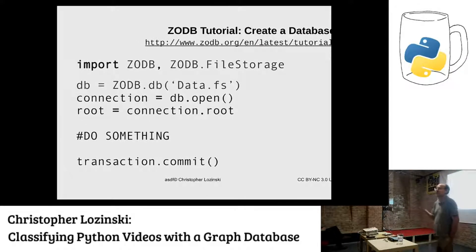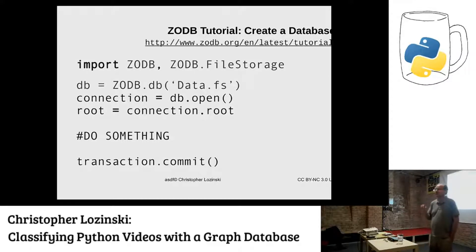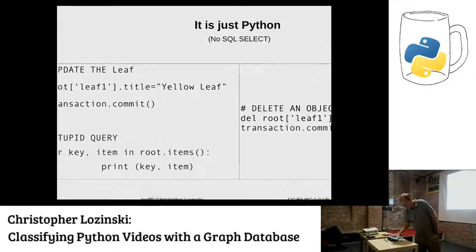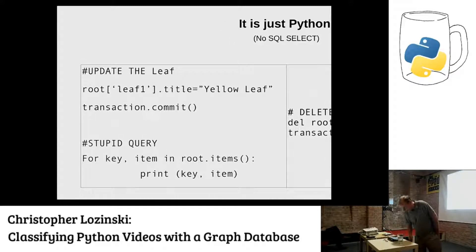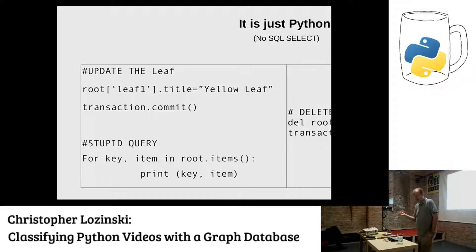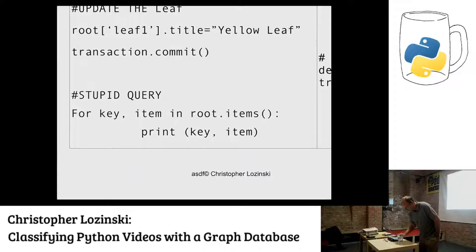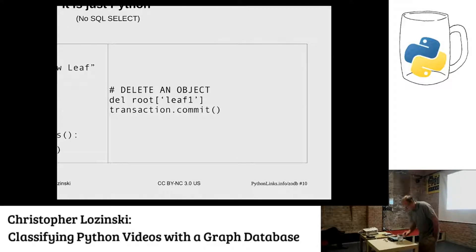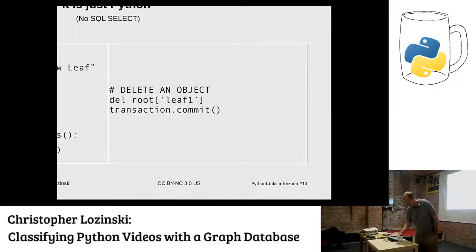There's some boilerplate that goes around the outside. You have to import it, create a database, get a connection, get the root object. Once you get the root object, you do some things, add things to it, do transaction.commit, and it all becomes persistent. It's just Python. If you want to change the title, you just go root.leaf_one and give it a new title. For a simple query: for key, item in root.items(), print key and item. If you want to delete something: del root['leaf_one'], transaction.commit. Pure Python, really easy. You don't even notice that you're dealing with a database.